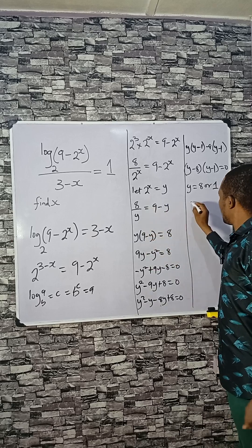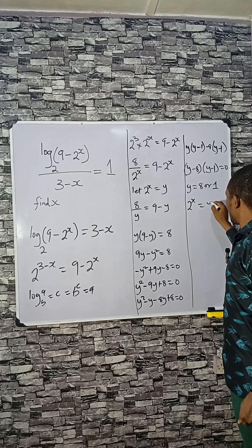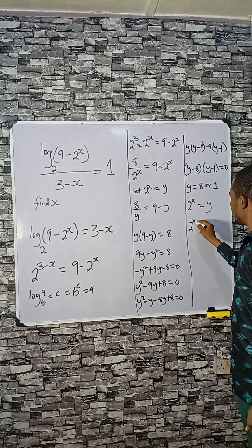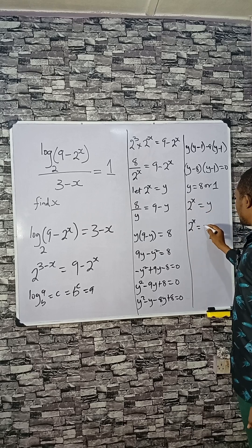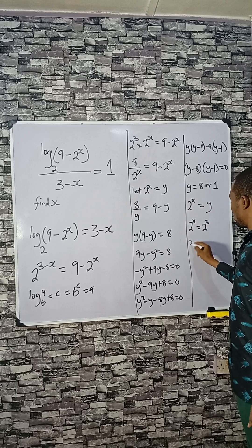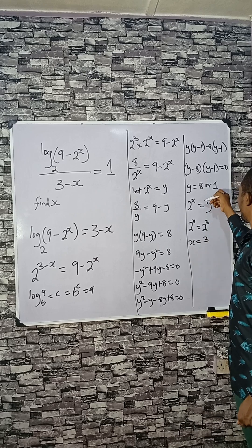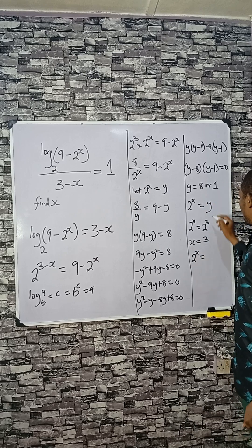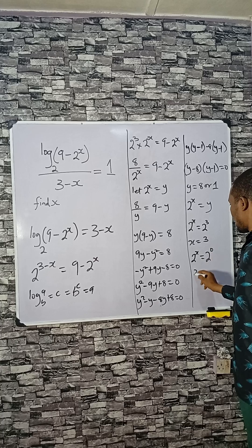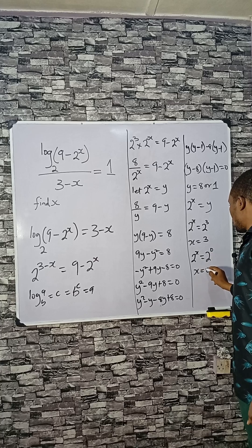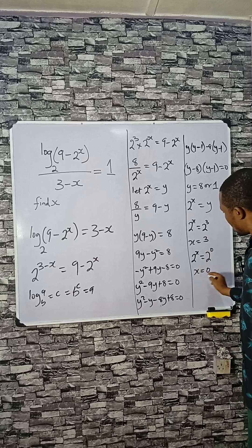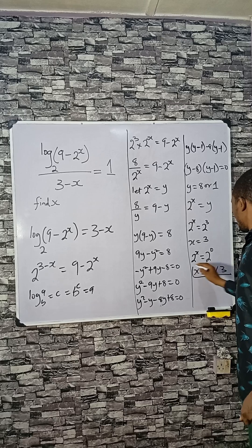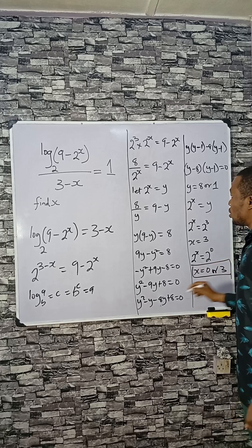Substituting back, 2 to the power x equals y. For y equals 8, that is 2 cubed, so x equals 3. For y equals 1, that is 2 to the power 0, so x equals 0. We have two candidate solutions: x equals 0 or x equals 3.